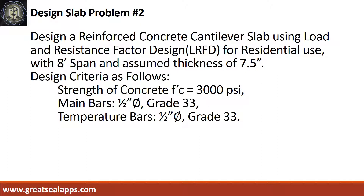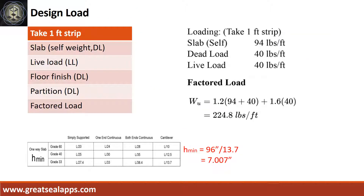Design a reinforced concrete cantilever slab using Load and Resistance Factor Design for residential use with 8 feet span and assumed thickness of 7.5 inches. Design criteria: strength of concrete 3000 PSI, main bars 1.5 inch diameter grade 33, temperature bars 1.5 inch diameter grade 33. The uniform load for 7.5 inch thick slab is 94 pounds per foot, residential live load is 40 pounds per foot, other dead load like floor finish and partition is 40 pounds per foot, for a total factored load of 224.8 pounds per foot.